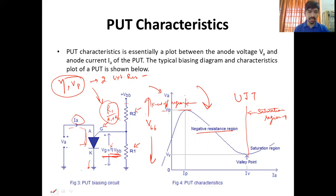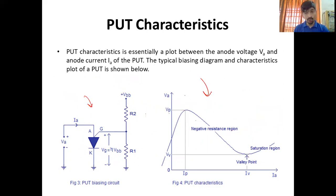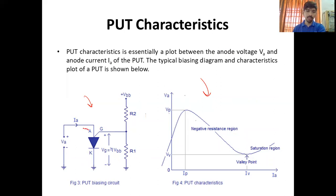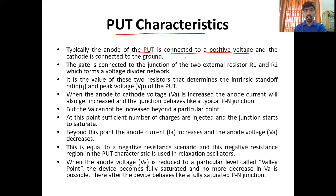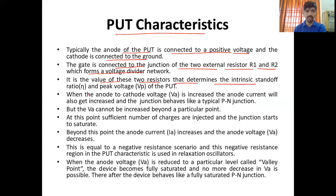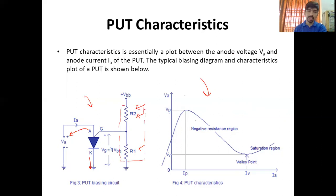The anode of PUT is connected to positive terminal of voltage supply and cathode is connected to ground। The gate is connected to the junction of two external resistors R1 and R2, which forms a voltage divider network — this is a voltage divider circuit। It is the value of these two resistors that determines the intrinsic stand-off ratio and peak voltage of the PUT। यह दोनों resistance की जो value है, वो eta की value और VP की value determine करेगी — जो कि UJT में fixed होता है।